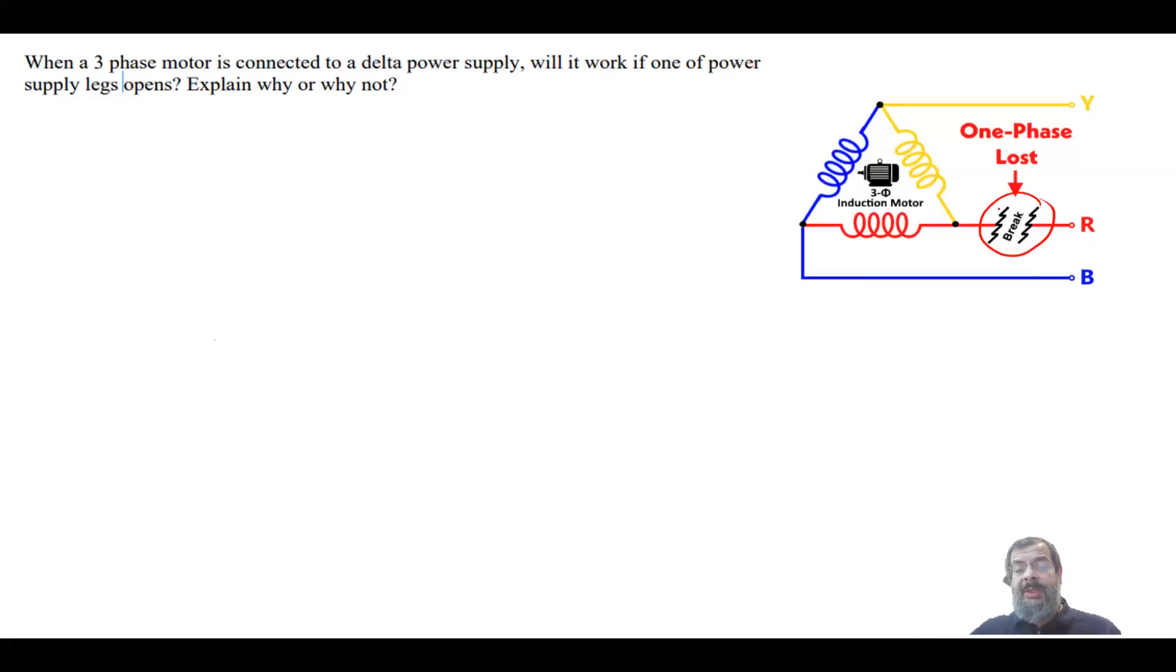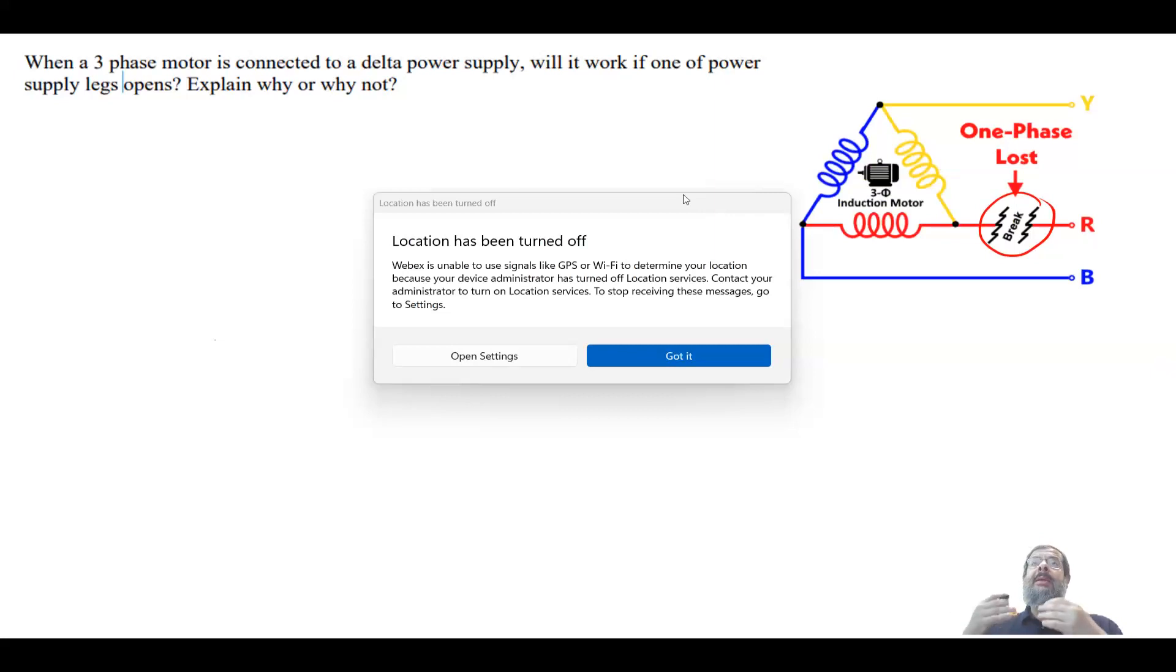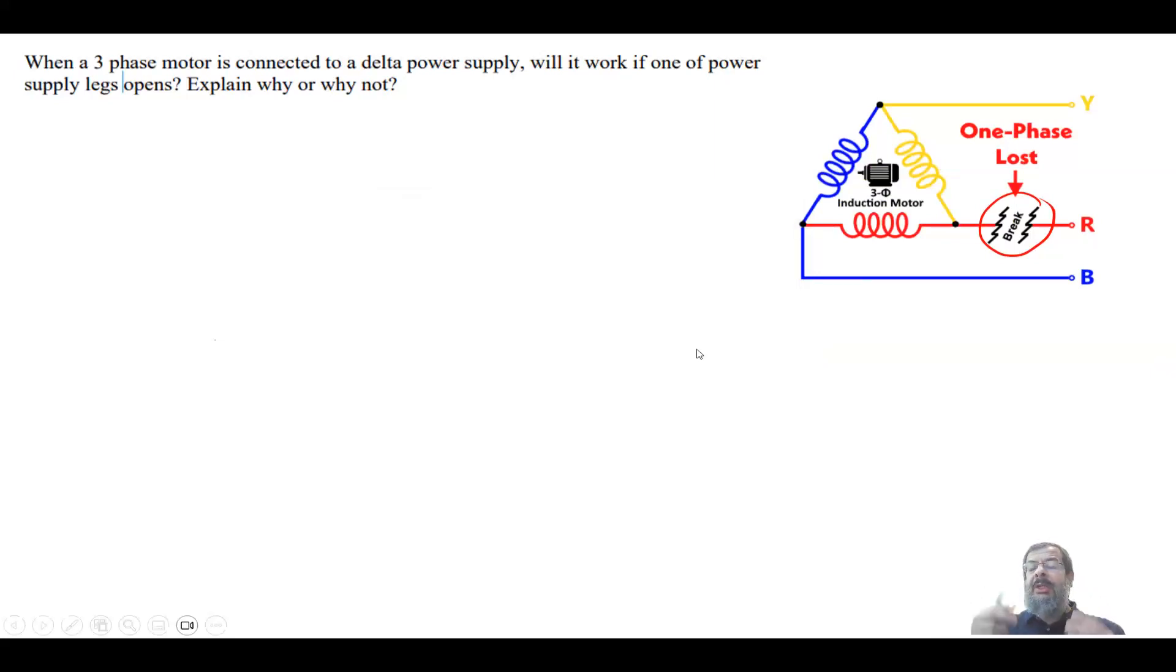Basically, what will happen is the motor, when one of the supplies is open circuit, will try to draw more current to compensate. And when you draw more current, you will have overheating of the motor. If the motor has thermal protection, it will disconnect.